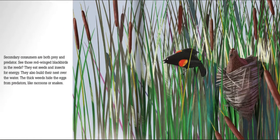Secondary consumers are both prey and predator. See those red-winged blackbirds in the reeds? They eat seeds and insects for energy. They also build their nests over the water — the thick weeds hide the eggs from predators like raccoons or snakes.